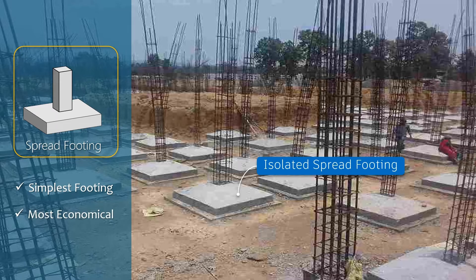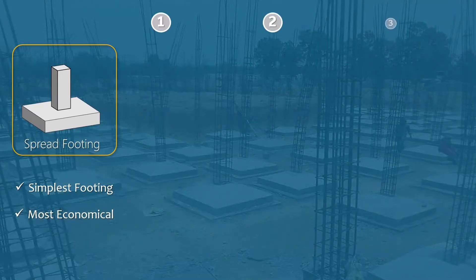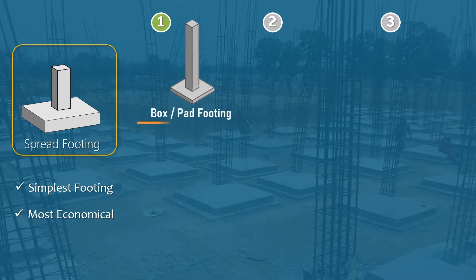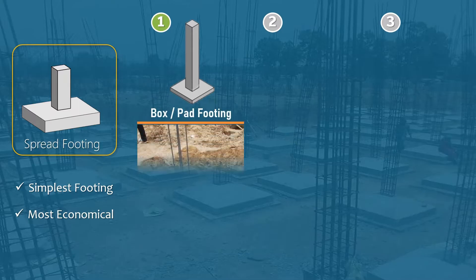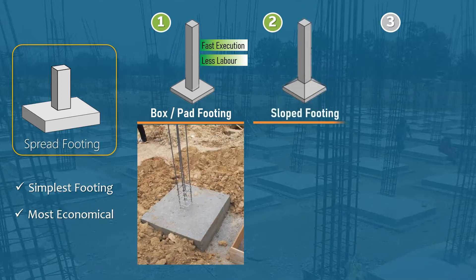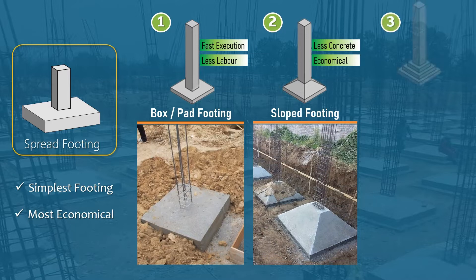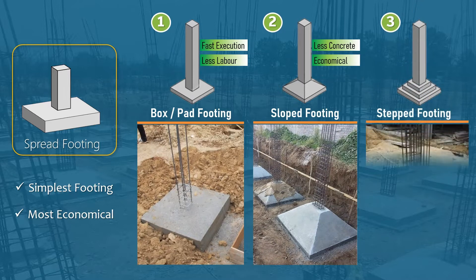Isolated spread footing can be of three types. First, pad or box footing — this type is fast in execution and requires less labor. Second, slope footing — this type is economical in concrete quantity but requires more labor. And third is step footing.